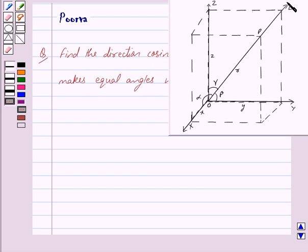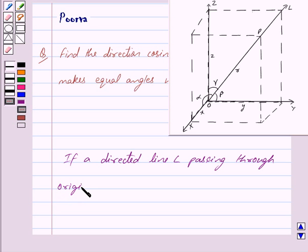Now if a directed line L passing through the origin makes angles alpha, beta and gamma with x, y and z axis respectively